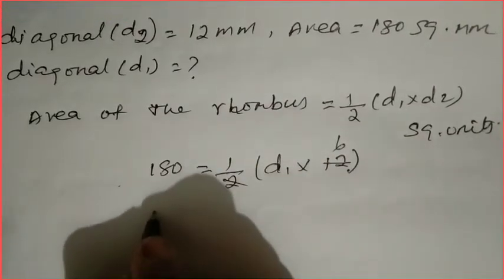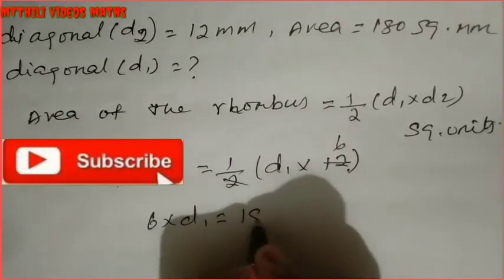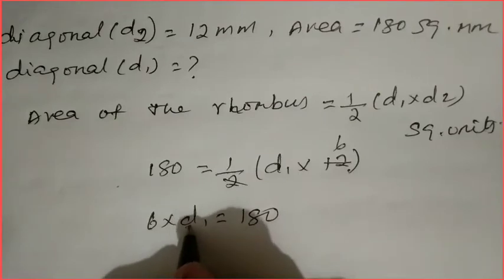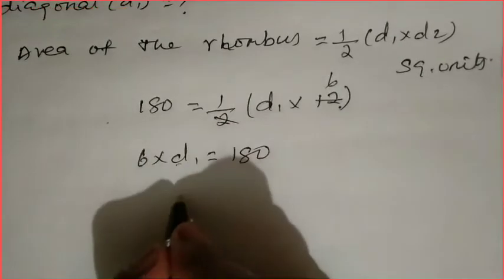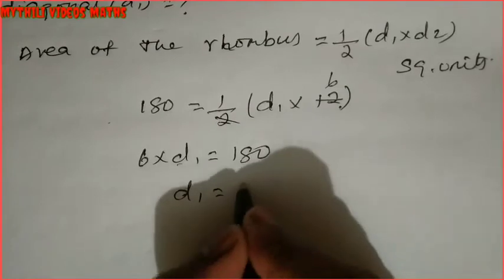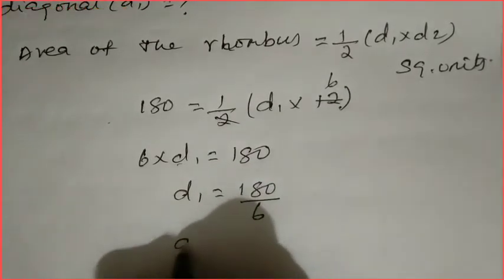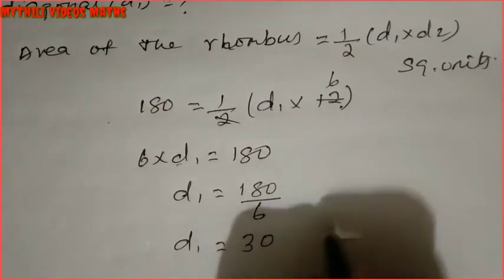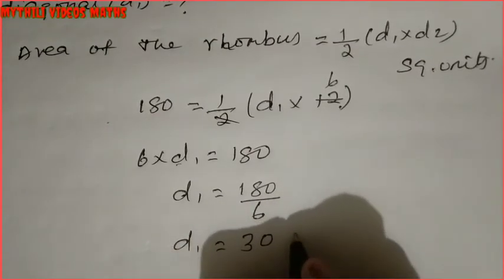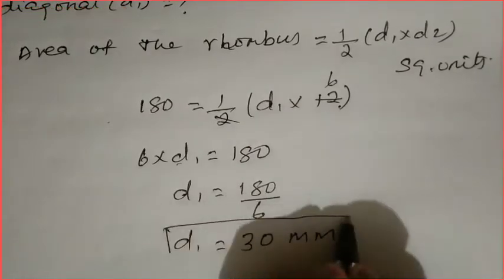Taking 6 × d1 to the left hand side: 6 × d1 = 180. We want d1 only, so d1 = 180 ÷ 6. Cancelling: 6 thirties are 180, so d1 = 30. Therefore, diagonal d1 = 30 millimeters.